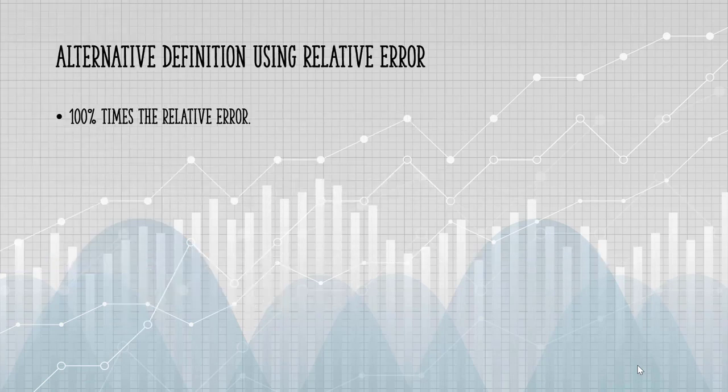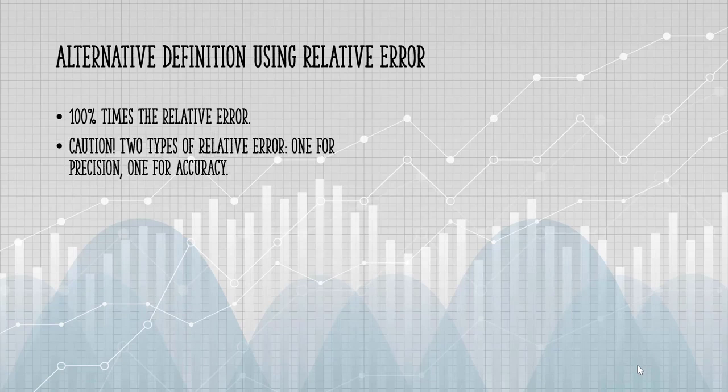Percent error is sometimes reported as being 100 times the relative error. You want to be careful though, because there are actually two types of relative error, one for precision and one for accuracy.